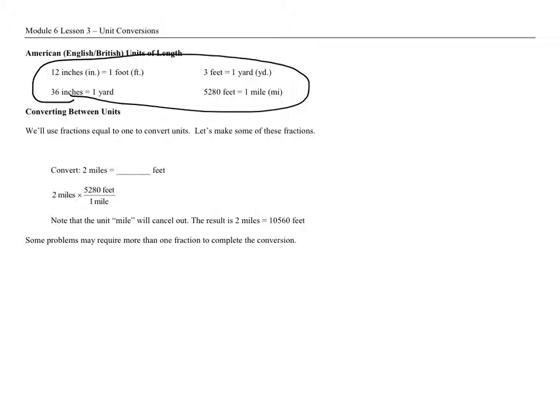So we're going to use fractions to convert. We're going to convert 2 miles to feet. Well, what we do is we do 2 miles and then there's 5,280 feet in 1 mile. So these miles will effectively cancel and then we'll multiply 2 times 5,280 and get 10,560 feet divided by 1, which is the result right there.